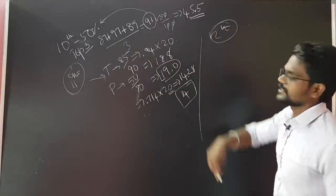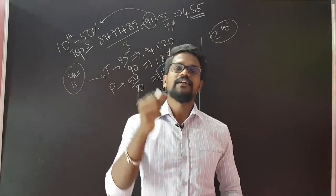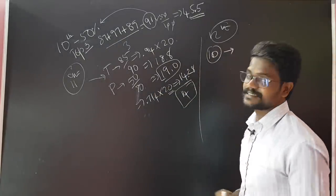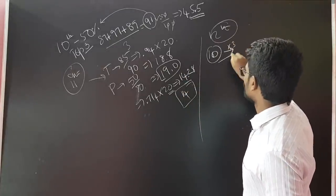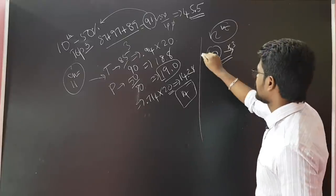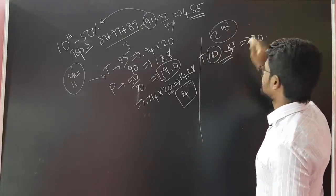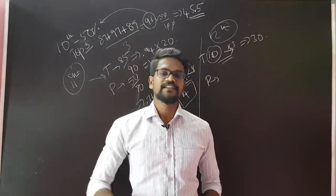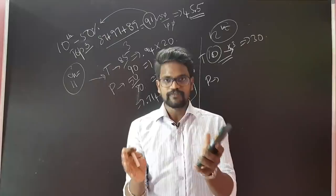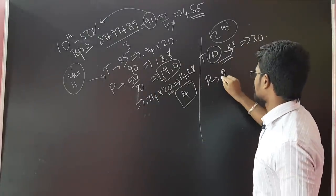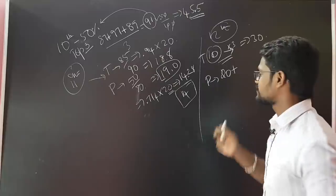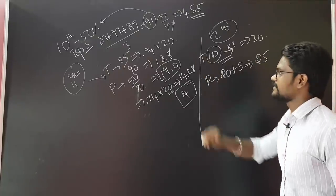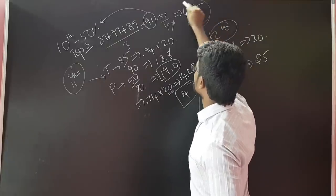Now let us say the 12th. That is the theory paper — Tamil, English, and other papers. The internal mark is 10, the internal mark is 30. That is multiplied by 3. We will get the mark for 12th standard. For Physics, we have 10 mark practical plus 10 mark internal assessment. If we consider practically we have 20 mark plus internal 5 or 6 mark — whatever it is. We can add that mark.